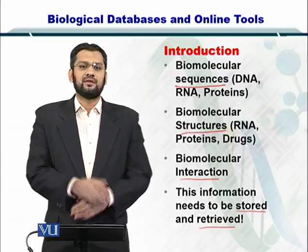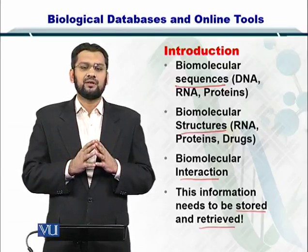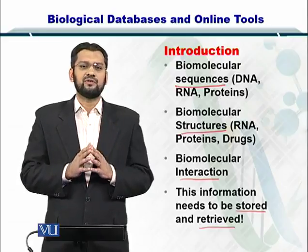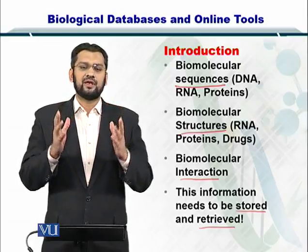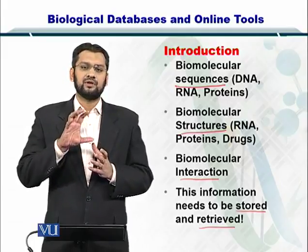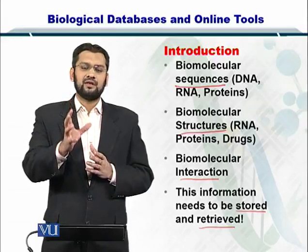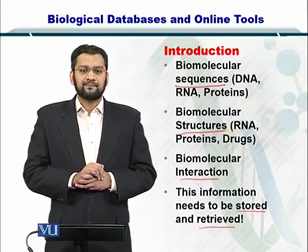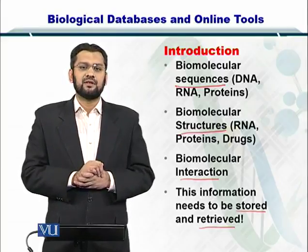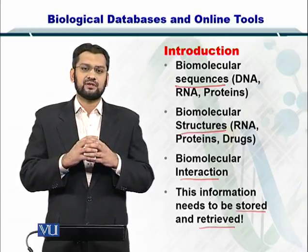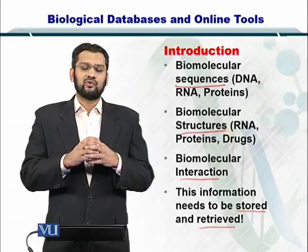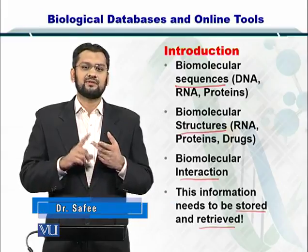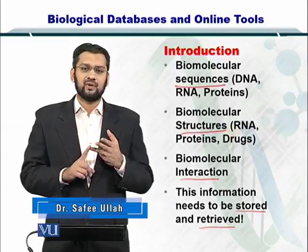The first one is the DNA sequence, the second one is the RNA sequence, and the third one are the protein sequences. Besides the sequence information, you also have these molecules taking 3D shapes, so we need to look at these structures and the information pertaining to these structural conformations. Moreover, there is a third type of information that may arise as a result of these molecules talking to each other or interacting with each other. So in totality, you have three sources of information: the first one is the sequences, the second one is the structure, and the third one is the interaction.